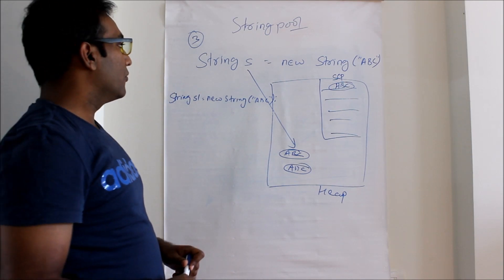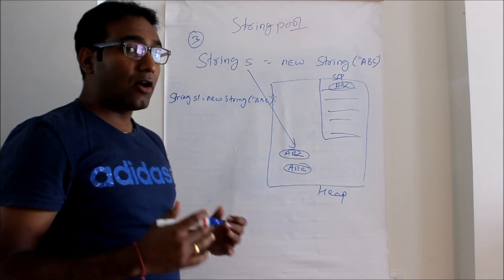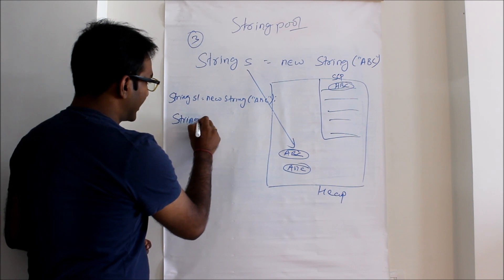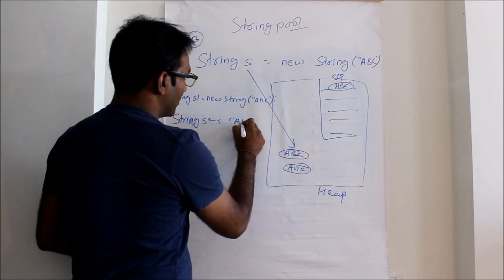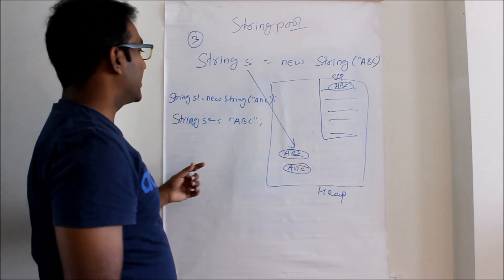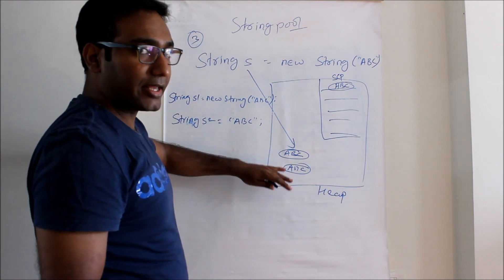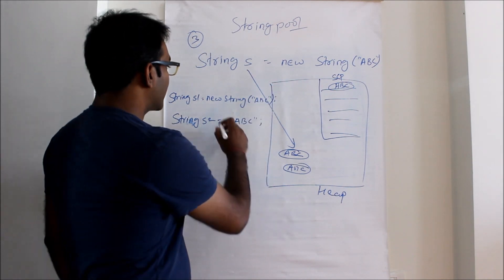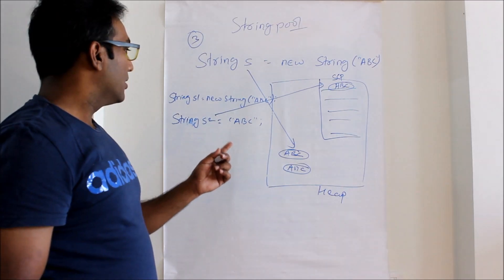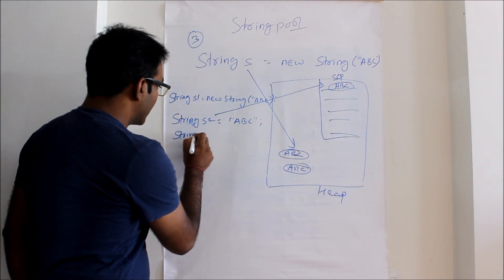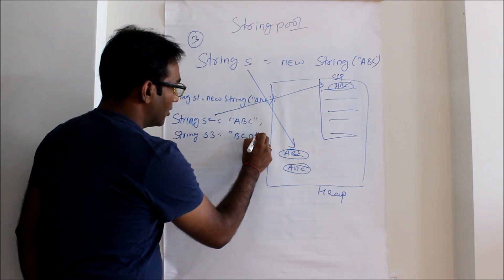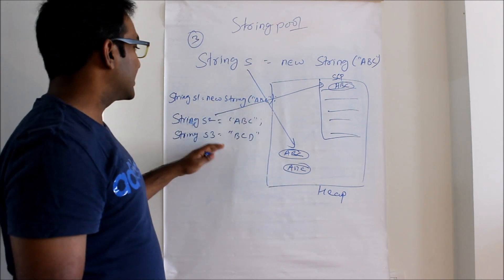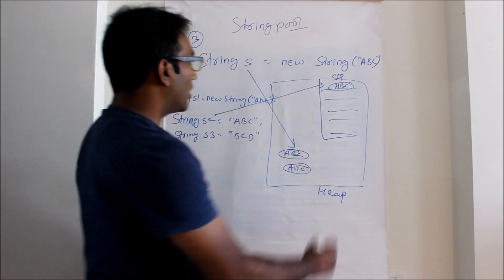Now we will see the string pool concept and its advantage. We can write a string literal like `String s2 = "abc"`. In this case, it will not create an object in the heap memory. It will simply search whether abc is in the string pool or not, and if it is there, s2 will simply refer to that existing entry — it will not create again. But if we have `String s3 = "bcd"`, a different value, it will search the string pool, find it is not there, and create one entry for bcd in the pool.